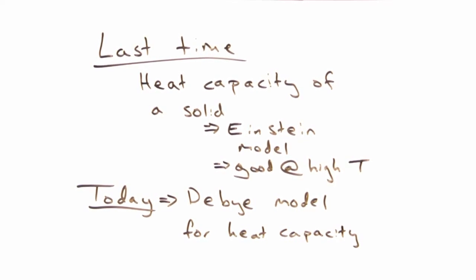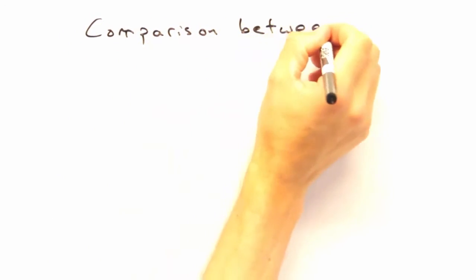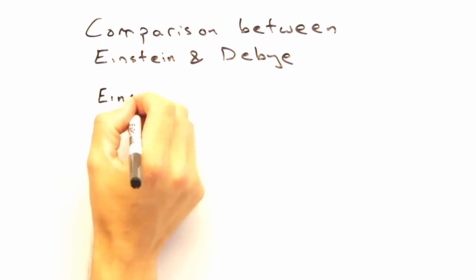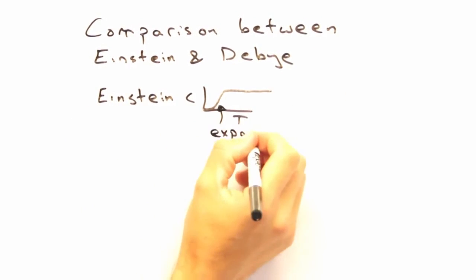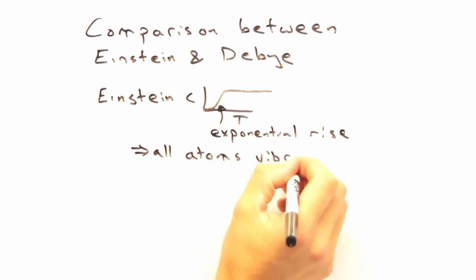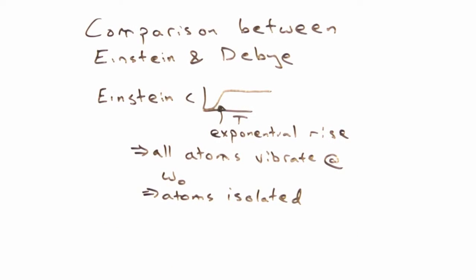How's that different from the Einstein model? Yeah, so Einstein assumed that all the atoms vibrated at the same frequency. At that point, we don't even have a dispersion relationship because we don't even have wave vectors. Each atom just sits there and vibrates without any interaction with its neighbors.